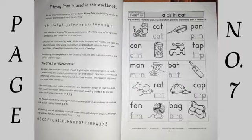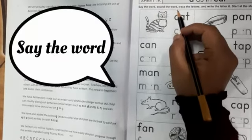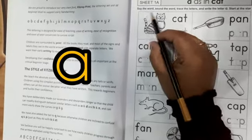So today we will do page number 7, open page number 7. On this page what you have to do is, you have to say the word, trace the letters and write the letter A.